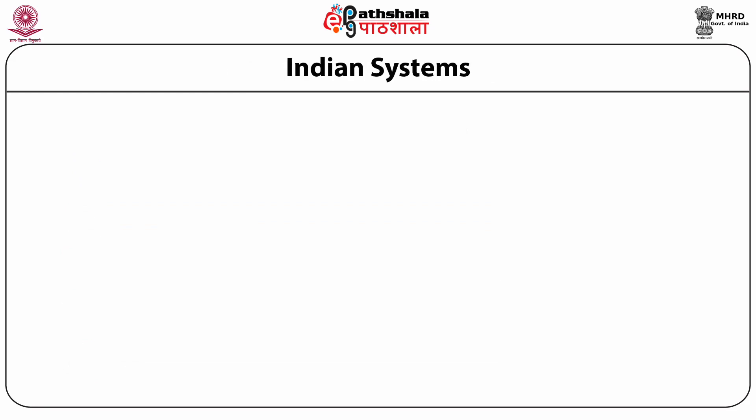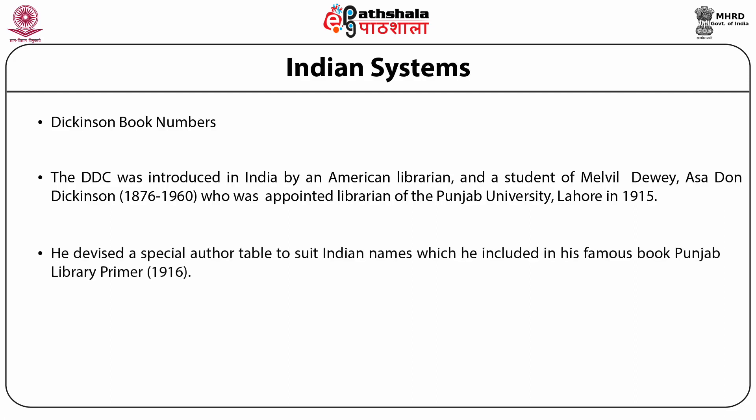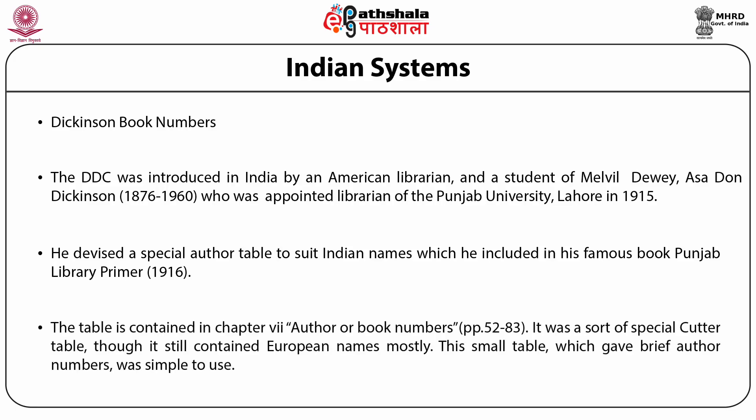Foremost among Indian systems is Dickinson's book number. The DTC was introduced in India by an American librarian and student of Melville Dewey, Asha Don Dickinson, born in 1876 in USA. He was appointed librarian of the Punjab University Lahore in 1915. He devised a special author table to suit Indian names, included in his famous book Punjab Library Primer published in 1916. The table is contained in chapter 7, 'Author or Book Numbers,' on pages 52 to 83. It was a sort of special Cutter table, though it still contained European names mostly. This small table, which gave brief author numbers, was simple to use and somewhat suitable for Indian libraries. It was an alphabetical system.